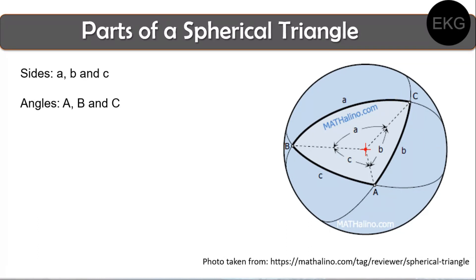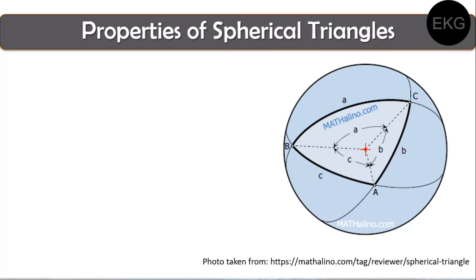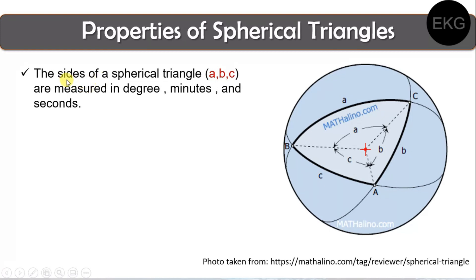Now let's go to the properties of spherical triangles. The first property is that the sides of a spherical triangle are measured in degrees, minutes, and seconds. This is a very important differentiation from the triangles discussed in previous lessons — the sides are no longer in units of meters, kilometers, or nautical miles, but in degrees, minutes, and seconds. This relates to our earlier lesson on conversion from degrees to minutes and degrees to radians. The sides a, b, and c are in degrees, minutes, and seconds — which also connects to how latitudes and longitudes are measured in degrees.